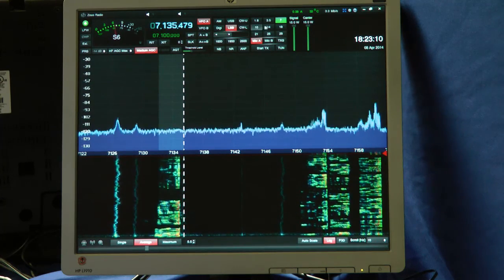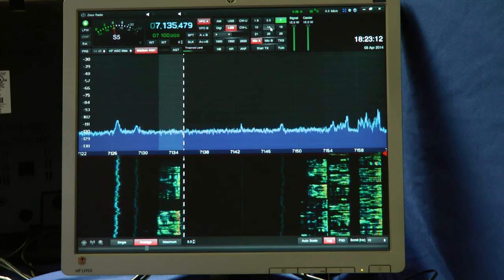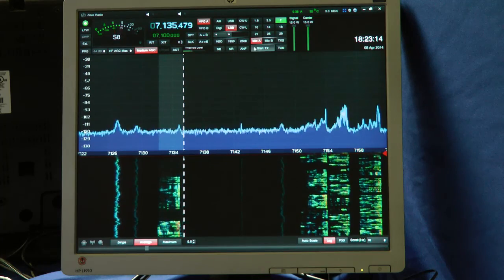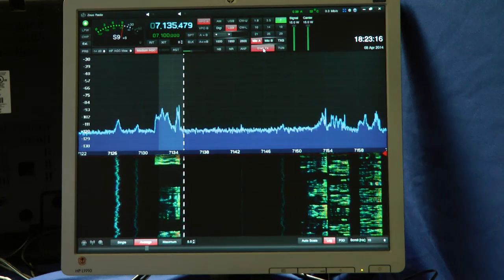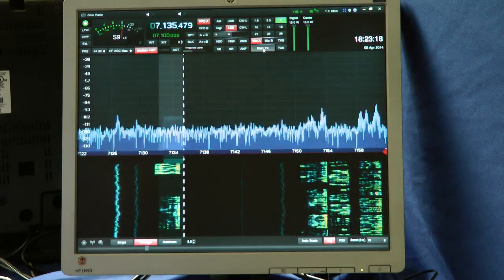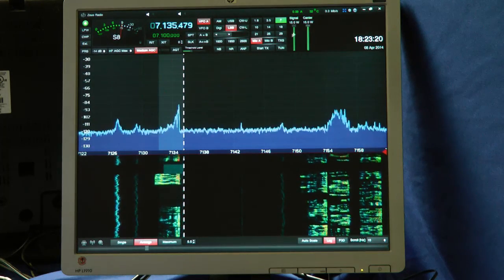Up here, we have the frequency selection and the different ham bands. You start transmitting here with this button. Click, and now you're transmitting. Off we go. Your carrier levels over here.